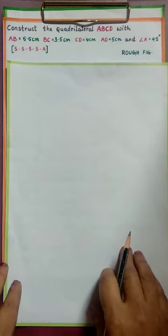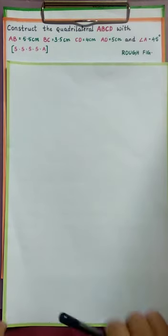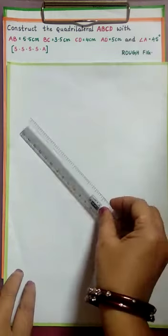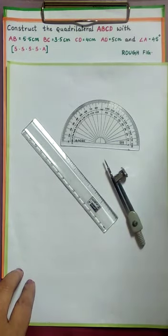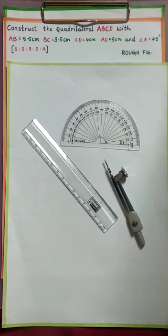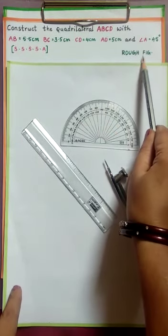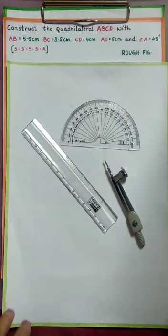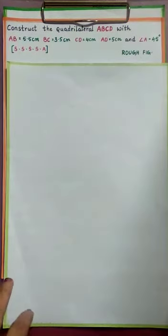Children, before constructing a quadrilateral we have to follow some rules strictly. Always use a white sheet for construction. You require geometrical instruments like ruler, protractor, and compass — keep all these ready. Study the given data carefully, use a dark pencil with a sharp end, first draw a rough sketch, then go for the main construction. Do not overwrite or thicken the lines and points.